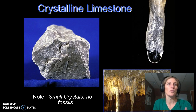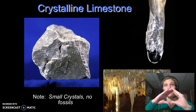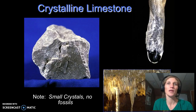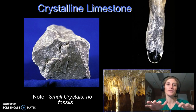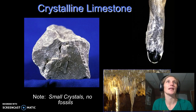Crystalline limestone is one where we don't see any fossils and we tend to see small crystal grains that come together and are very shiny. We see these in cave deposits like stalactites — this is from Cave of the Mounds. They can also be precipitating in places where there's standing water enriched with calcium and carbonate, and as it becomes overly enriched, it will start to precipitate out.